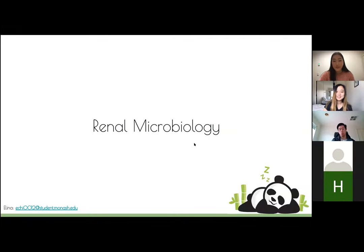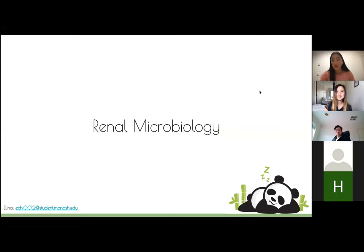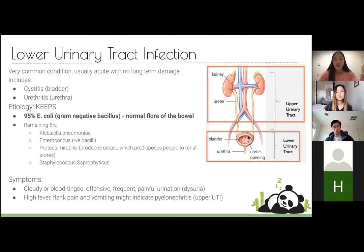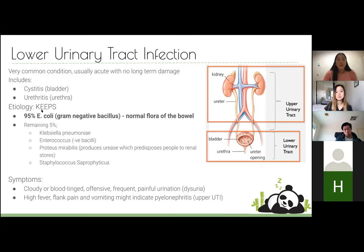We're going to get started with microbiology, which is very short because it's literally only talking about UTIs. We have lower urinary tract infection and upper urinary tract infections, and the division is really just at the bladder. Lower urinary tract includes cystitis, which is infection of the bladder, and urethritis, which is infection or inflammation of the urethra.